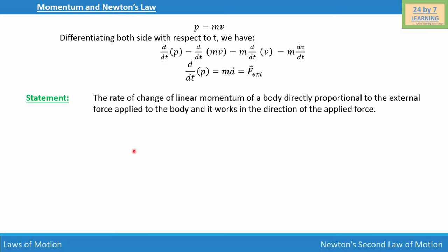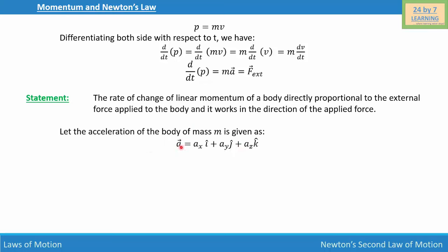Now let's establish another relationship. Let the acceleration of the body of mass m be given as a is equal to a_x i plus a_y j plus a_z k. And we know that F external is equal to mass times acceleration. So I'm going to substitute the value of acceleration, giving us F external is equal to mass times the bracket a_x i plus a_y j plus a_z k.